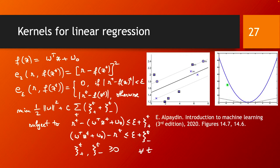One more comment about the epsilon-sensitive error function: in this figure you can see the difference between the quadratic or sum-of-squares error function typically used in linear regression versus the epsilon-sensitive error function. This again illustrates that the epsilon-sensitive function is more tolerant to noise — noise contributes less to it than to the sum of squares.